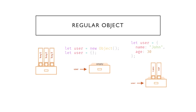A regular object may be created with figure brackets with an optional list of properties. A property is a key-value pair where the key is a string, also known as a property name, and the value which can be basically anything. We can imagine an object as a cabinet with signed files — every piece of data is stored in its file by the key. It's easy to find a file by its name or add and remove a file. These helpful infographics were taken from javascript.info.